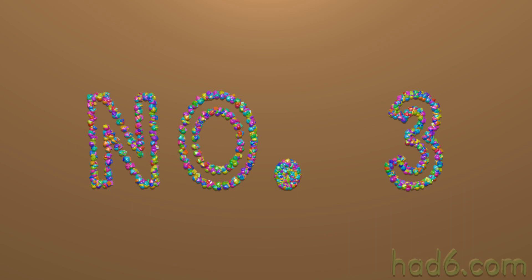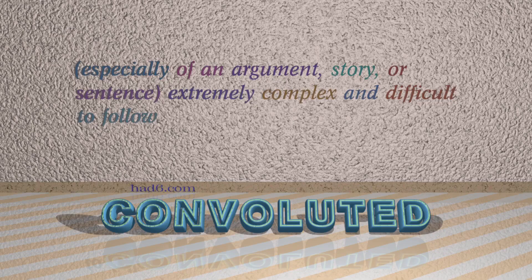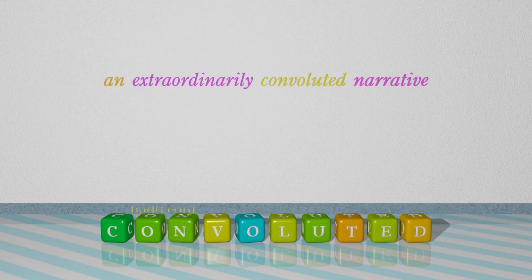Number 3: Convoluted. Which means — especially of an argument, story, or sentence — extremely complex and difficult to follow. For example: An extraordinarily convoluted narrative.